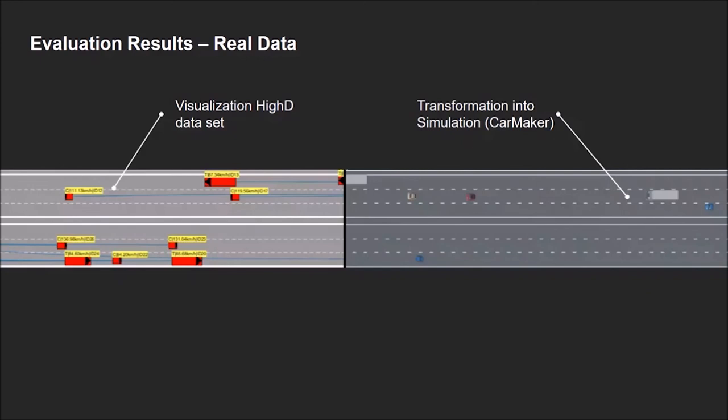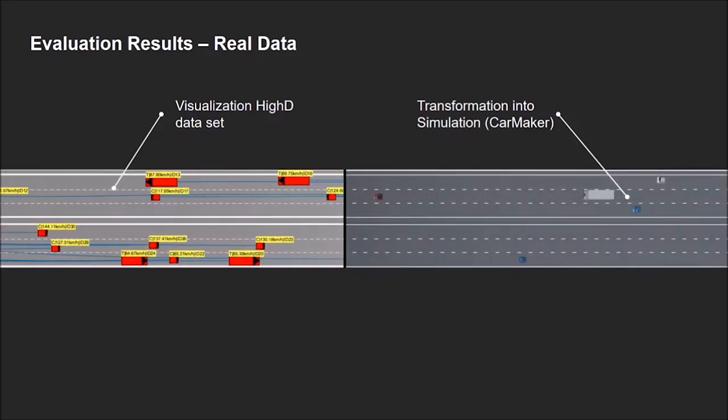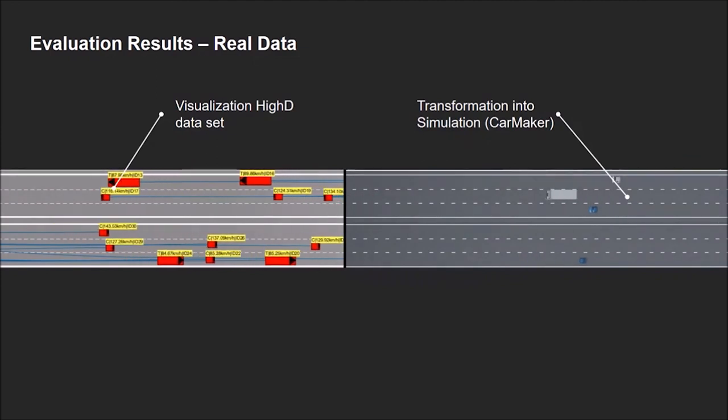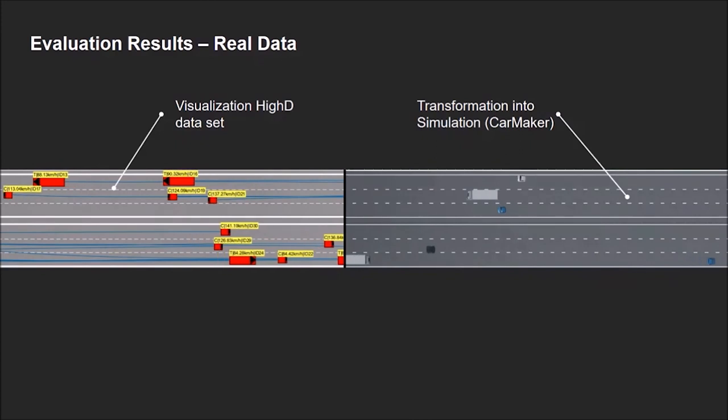On the left-hand side, you see a visualization of an example data trace of HighD dataset. In the first step, we transferred all trajectories in a simple replay simulation in CarMaker without using any models for ego vehicle or any object. You see the corresponding top view of the same sample in CarMaker on the right-hand side compared to the input data of HighD on the left-hand side.